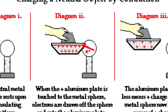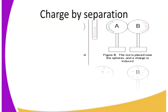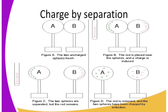We have charging by separation. As you can see, we have two spheres, sphere A and sphere B. What happens when we bring a negatively charged object in front of the two spheres? The negatively charged particles are repelled to the far end of sphere B, so the positively charged particles remain in sphere A. When we separate the two, the positively charged particles in sphere A redistribute themselves, making sphere A positively charged, while sphere B becomes negatively charged.